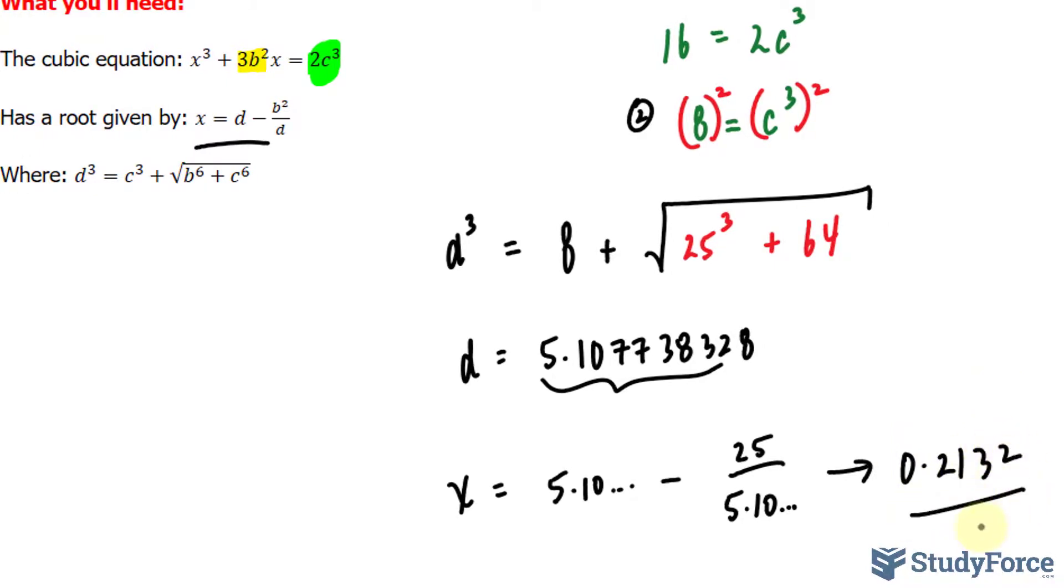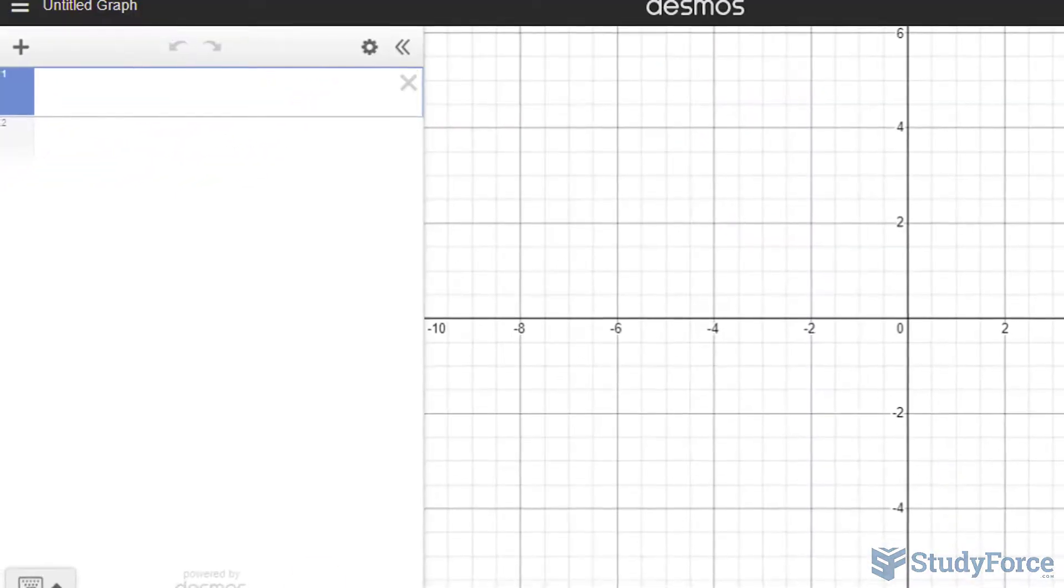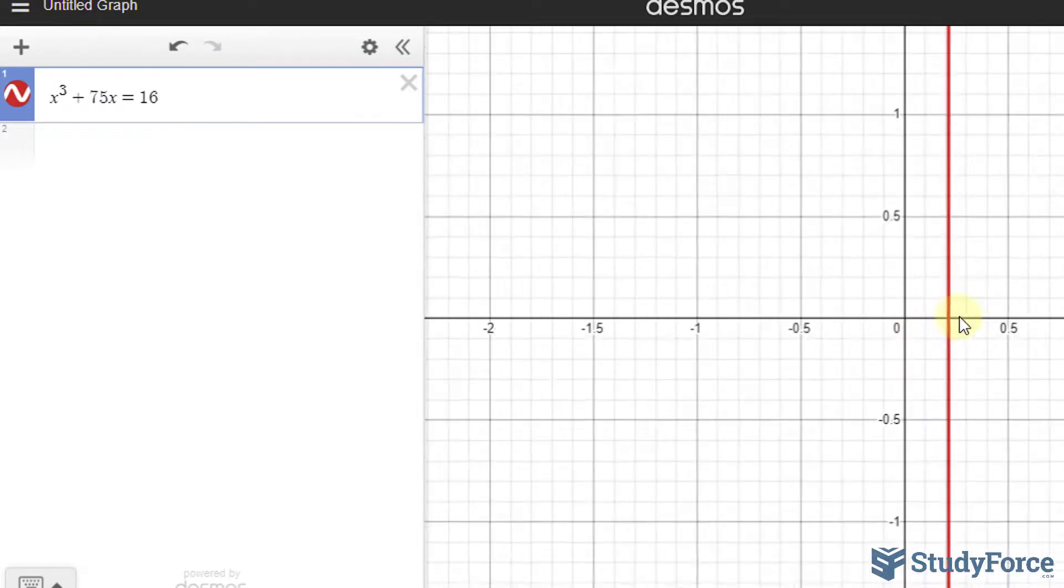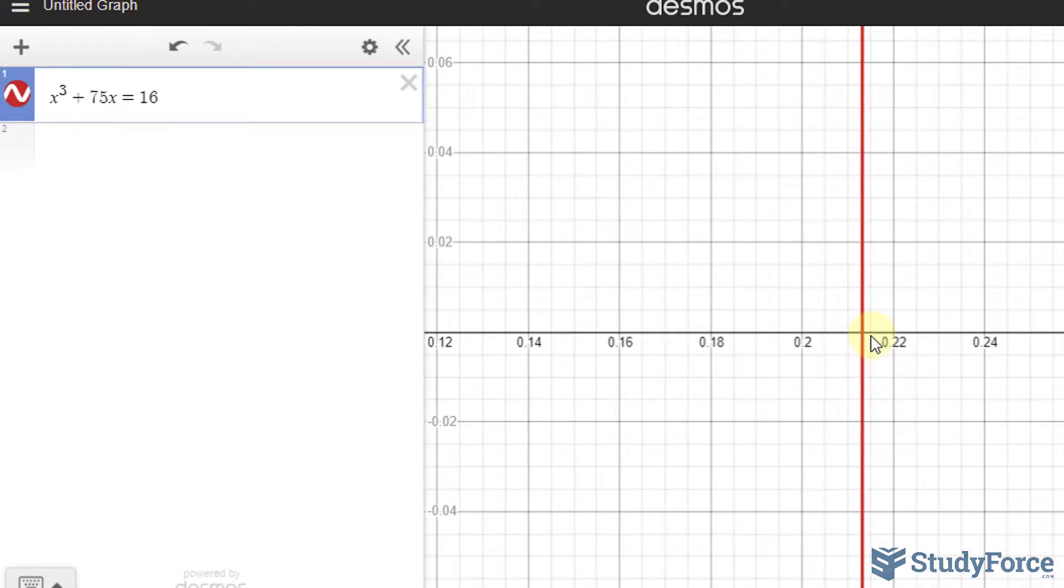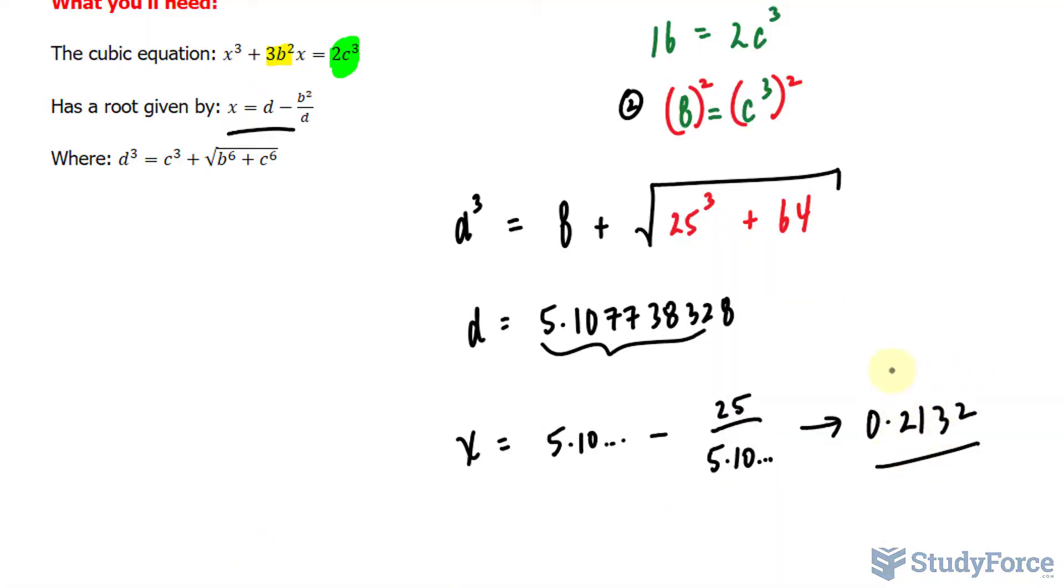That is the only root for this cubic function. And to prove to you that that is the root, let's graph this on a graphing calculator, where we have x³ + 75x = 16. And if we zoom in, you should end up with a value that is between 0.21 and 0.215. And that's precisely what we reported as our answer.